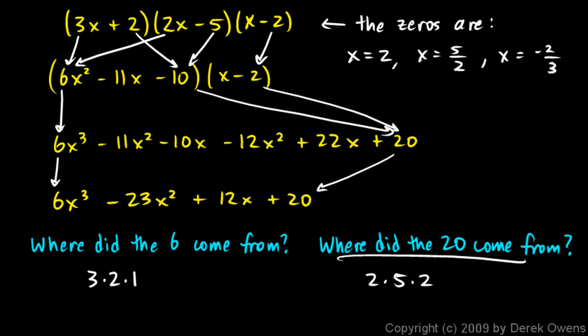And the 20 over here, where did the 20 come from? This 2 and this 5 and this 2. Look up here. 2, 5, and 2. The numerators of those zeros gave us that 20. That 20 right there on the end.